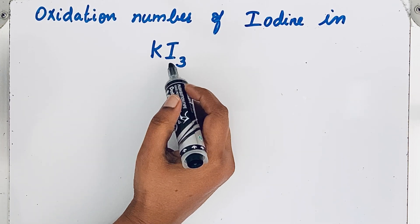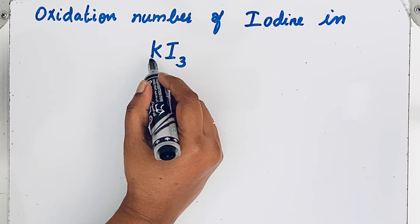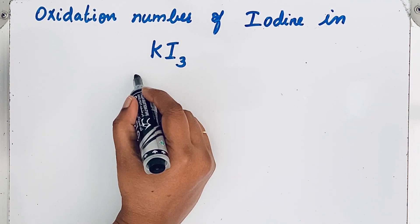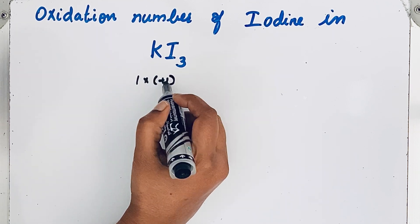So in KI₃ potassium is an alkali metal. So the oxidation number is plus 1. Here only one potassium atom is present. So 1 into plus 1. This is oxidation number of potassium.